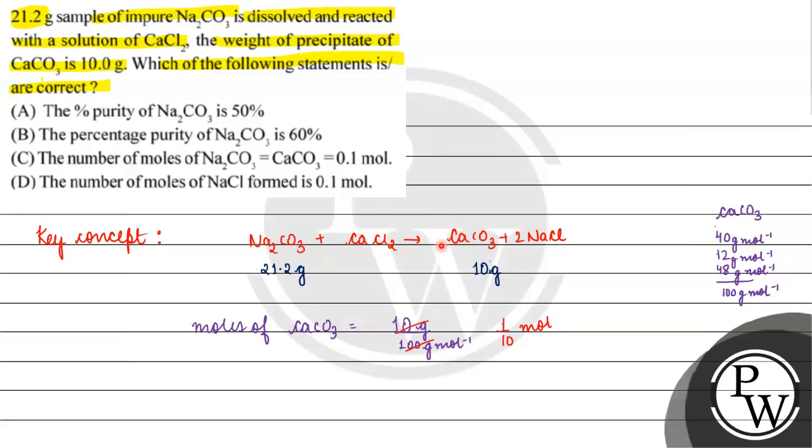So, if we talk about 1 mole of calcium carbonate and 1 mole of sodium carbonate, what should be the molar mass? Na2CO3, 23 into 2 plus 12 plus 48, this will come out to be 106 gram per mole. If we get 0.1 mole of calcium carbonate, then it must have come from how much sodium carbonate? 10.6 gram of sodium carbonate.